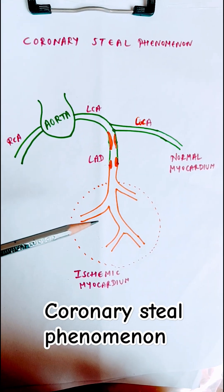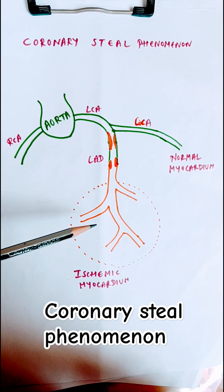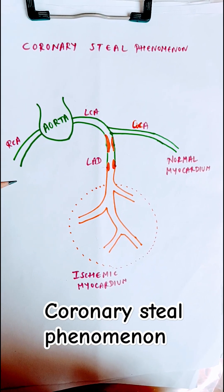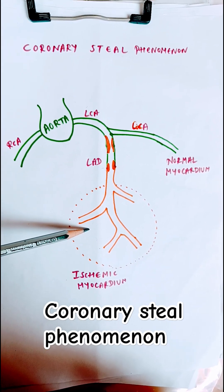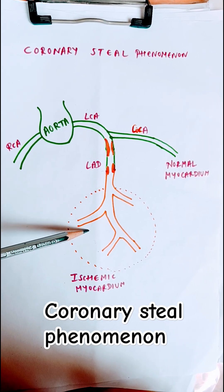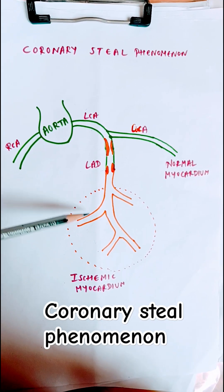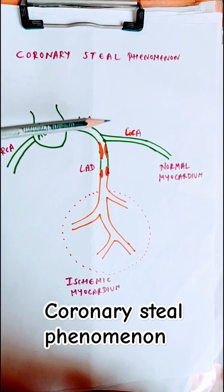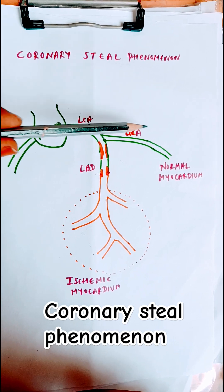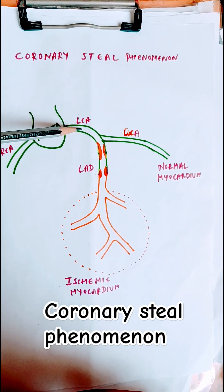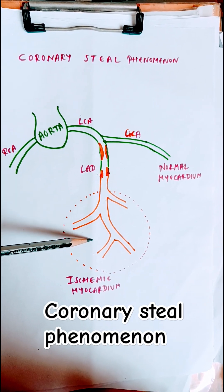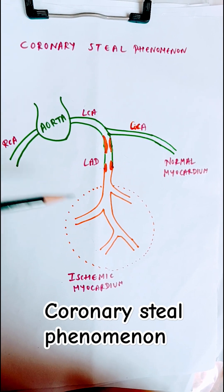Remember: the diversion of blood flow from the already compromised ischemic region to a normal myocardium is coronary steal phenomenon. This happens because the ischemic myocardium is already maximally dilated. When vasodilators are given or the person exercises, the healthy myocardium needs more blood, so blood flows via the circumflex artery to the normal myocardium, further compromising the ischemic region.